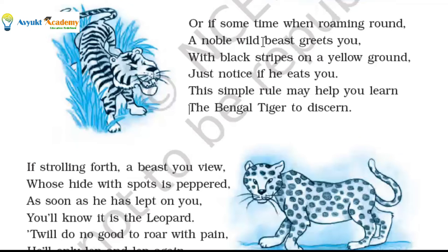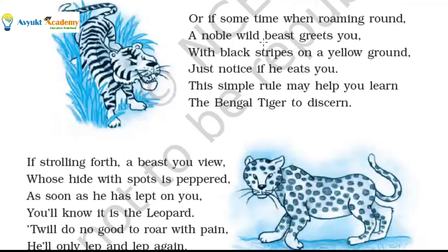This stanza also uses dark humor to explain the tiger's physical appearance. Once a person has been eaten up by a wild animal, there is no use in determining which wild animal it is. After eating, it doesn't bother at all. The poetess is trying to help us know the identification of the Bengal tiger.